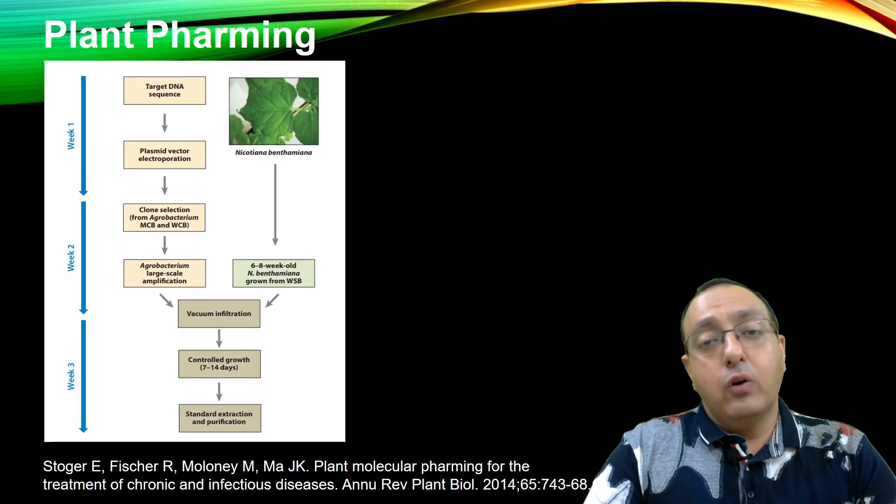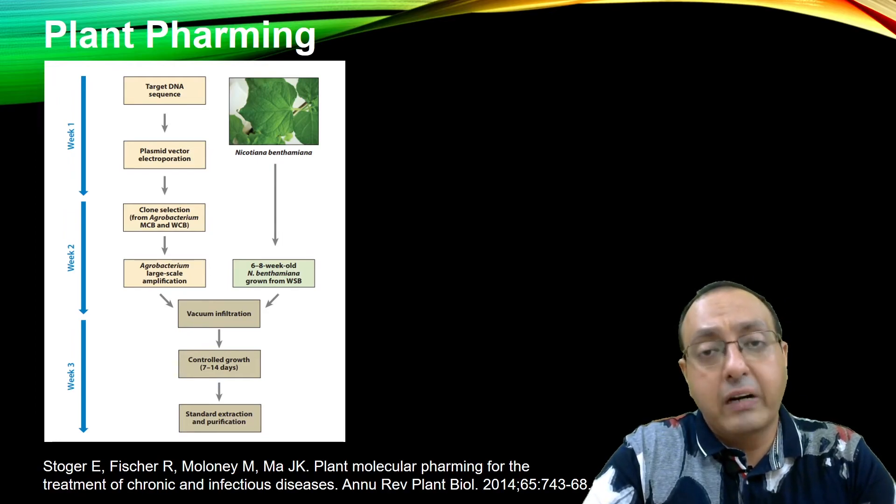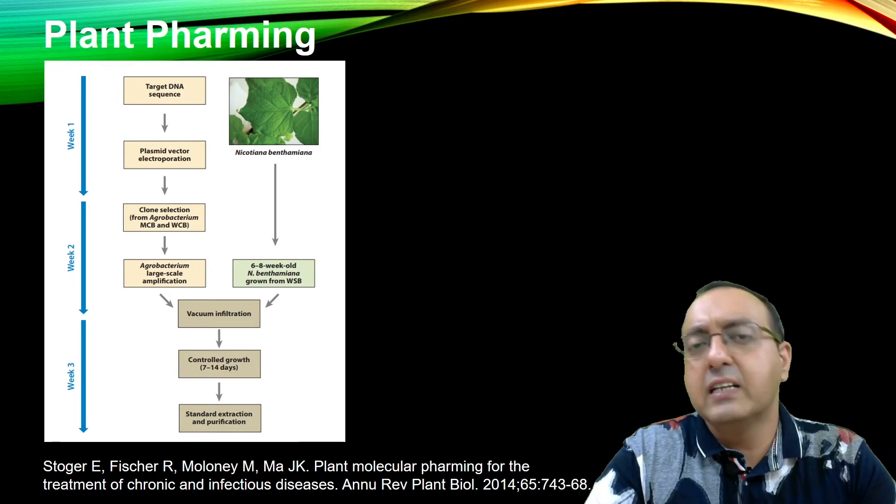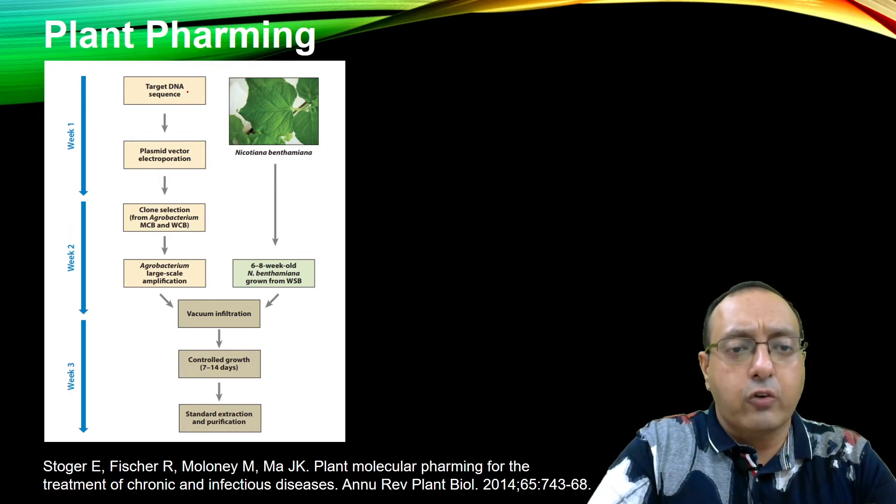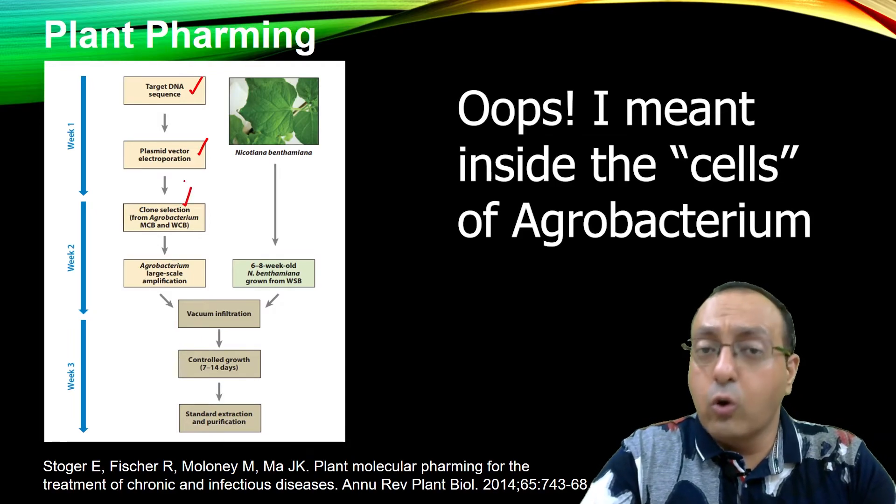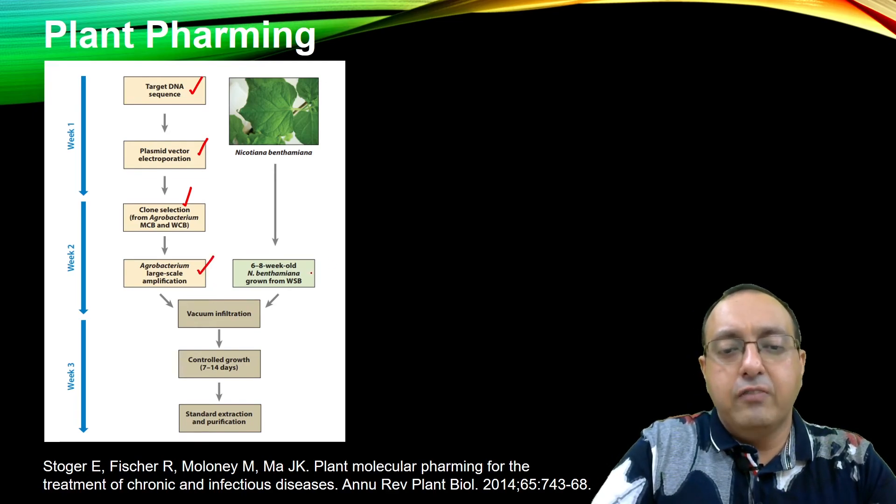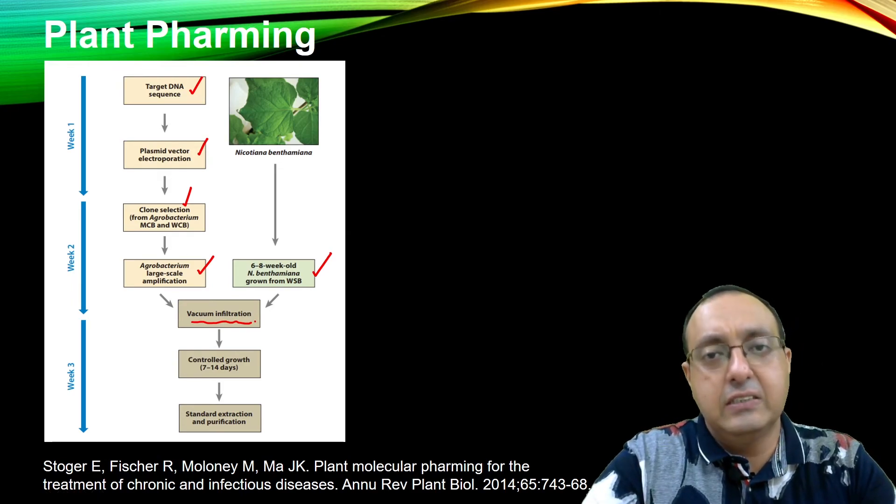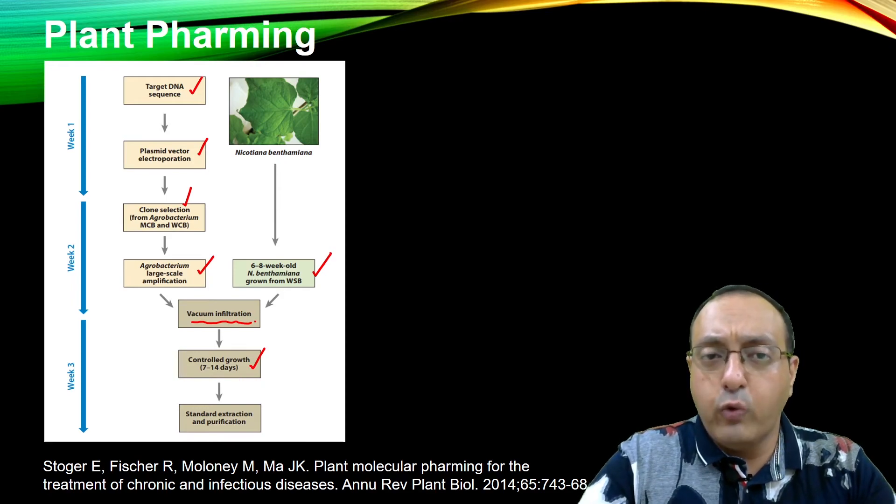And plants are very useful if we want to really test the expression of protein very quickly and we want to scale up later on in other systems. For example, as you know, Agrobacterium mediated transformation is the method of choice for introducing foreign genes into plants. And we can transiently express these foreign proteins, check their activity, whether they are expressing well, and then we can scale it up to other systems. So here we have our target DNA sequence. We use electroporation to get the plasmid vector inside the leaves. Then we use clone selection from Agrobacterium. We amplify Agrobacterium, grow it in mass cultures. Then we have tobacco plants which are six to eight weeks old. And using vacuum infiltration, we basically transiently transfect these DNA constructs into these plants. And after a few days of controlled growth, we can extract and purify our recombinant protein. So very easy to use method.